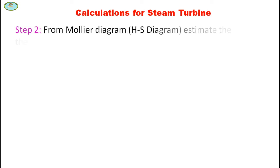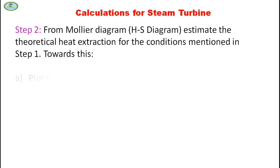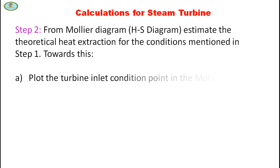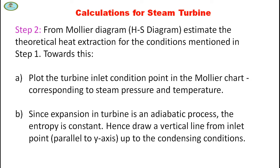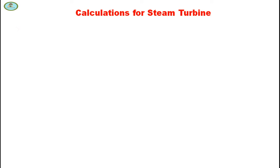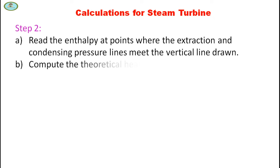In Step 2, from the Mollier diagram, estimate the theoretical heat extraction from the conditions mentioned in Step 1. Plot the turbine inlet condition point on the Mollier chart corresponding to steam pressure and temperature. Since expansion in a turbine is an adiabatic process, entropy is constant. Hence, draw a vertical line from the inlet point up to the condensing conditions, and read the enthalpy at the point where the extraction and condensing pressure lines meet the vertical line drawn. Compute the theoretical heat drop for each stage of expansion.